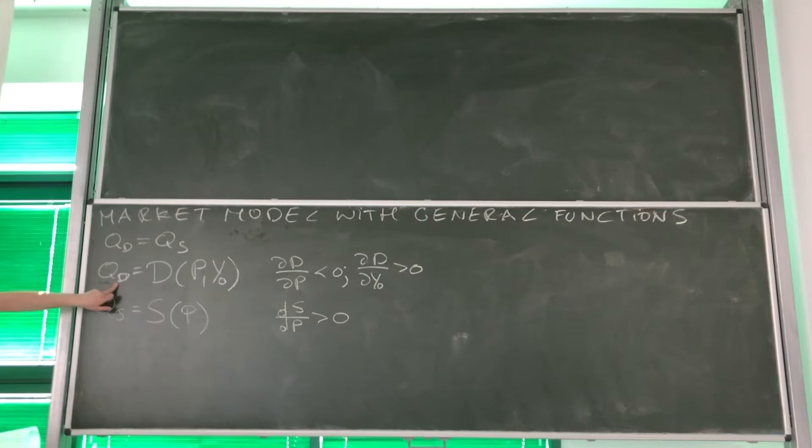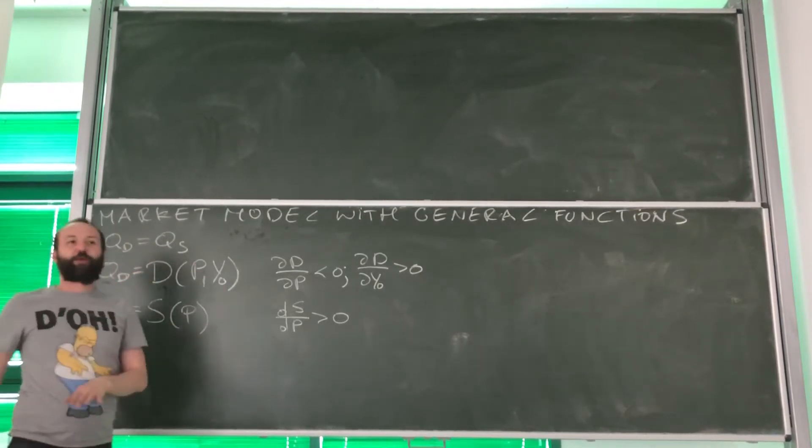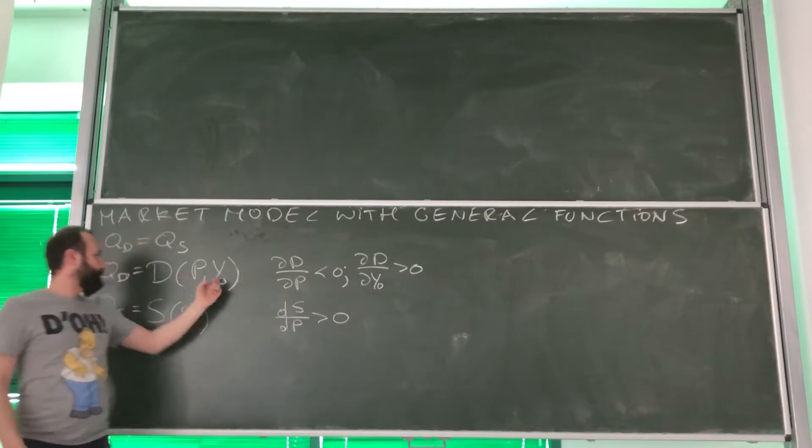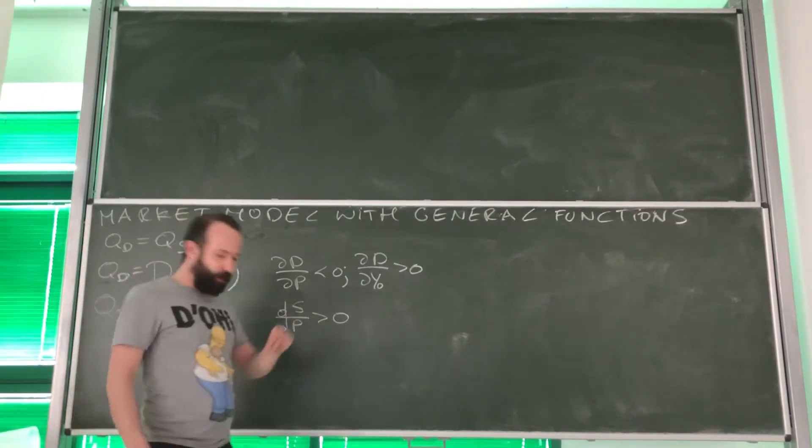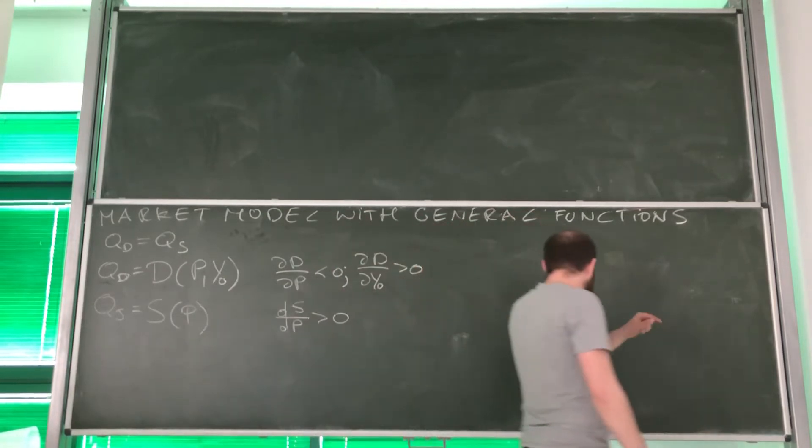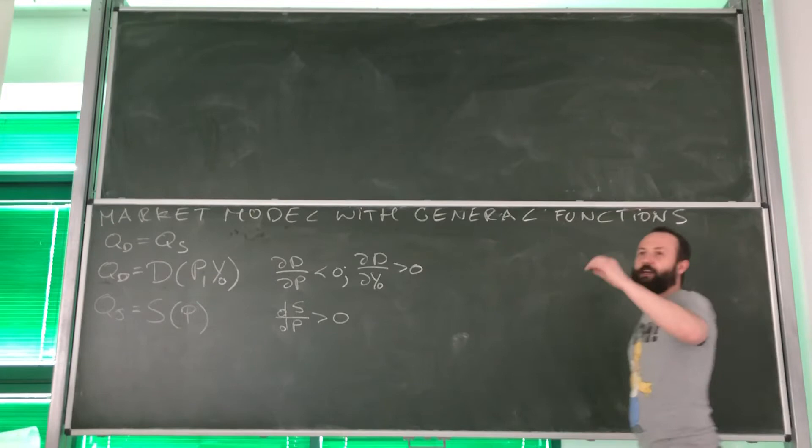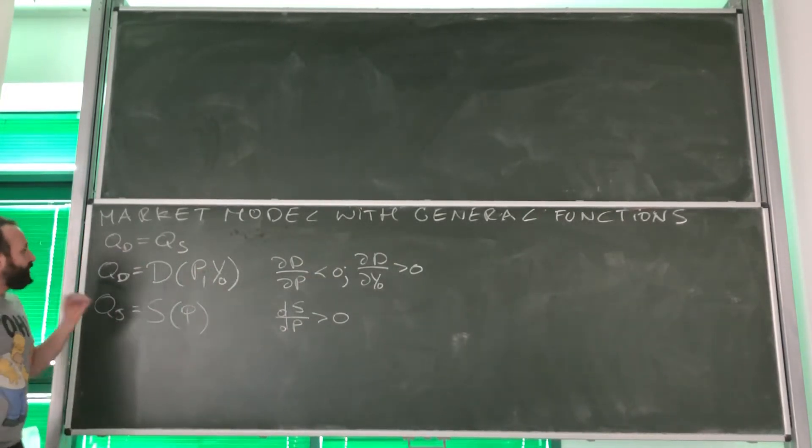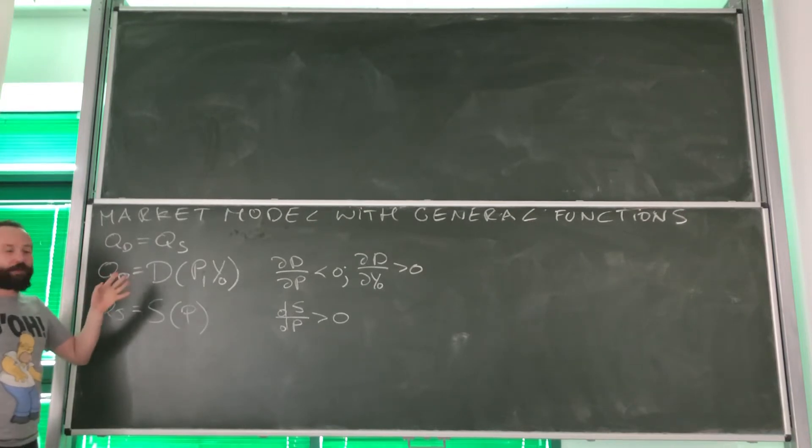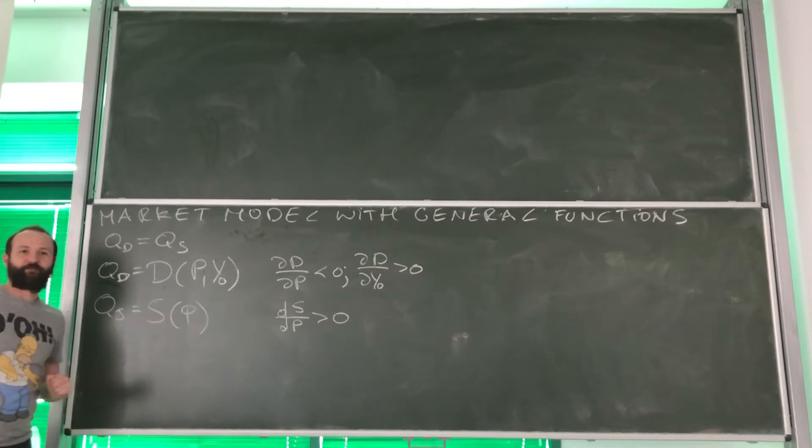Quantity demand is some function of price and income. In this case, we are not assuming that this is a linear function, quadratic exponential function, logarithm function, reciprocal function, nothing. We do not know exactly how this function looks.